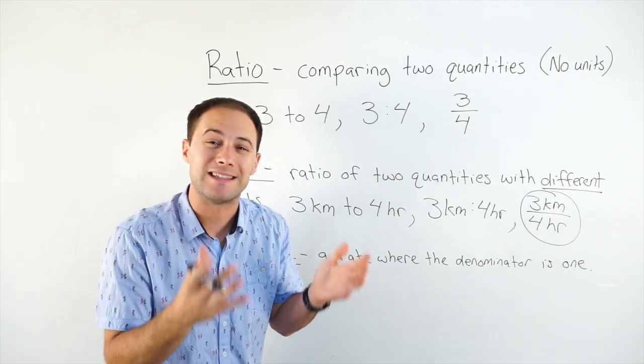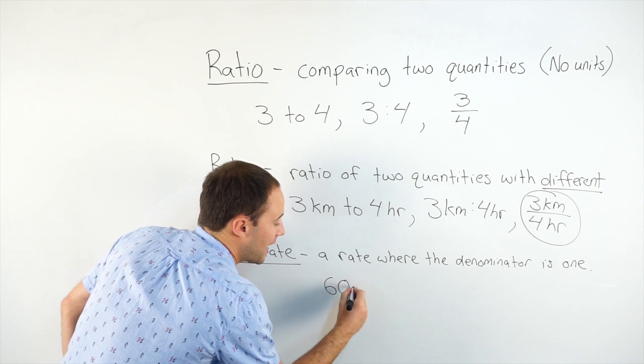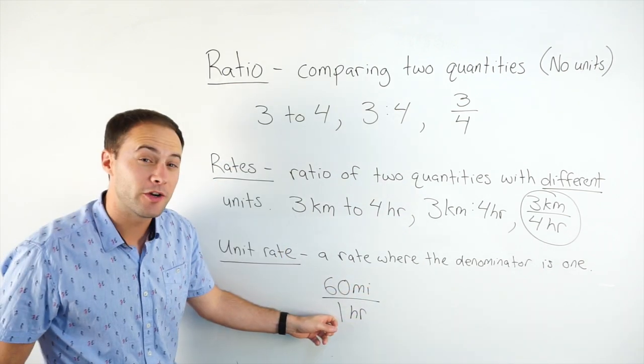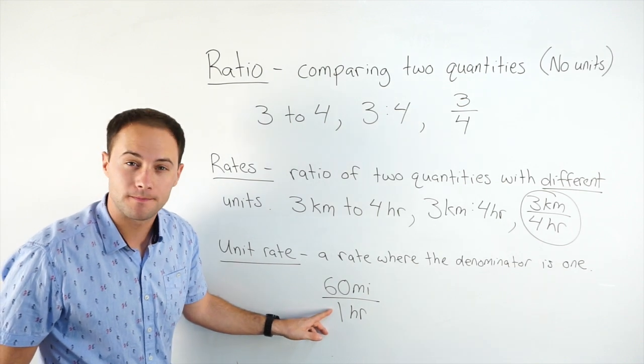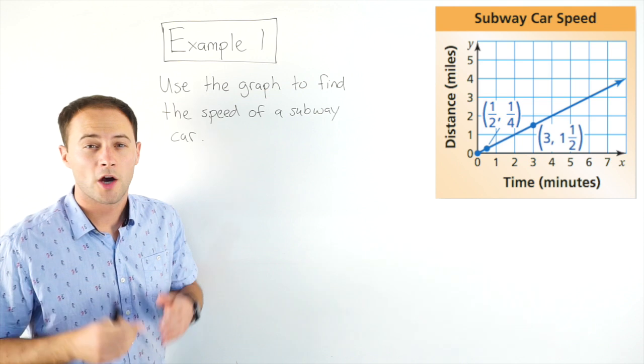Or a speed, 60 miles per hour. We would write that as 60 miles per one hour. That's a unit rate. The denominator is one. So that's just a quick recap. Let's get to our first example.